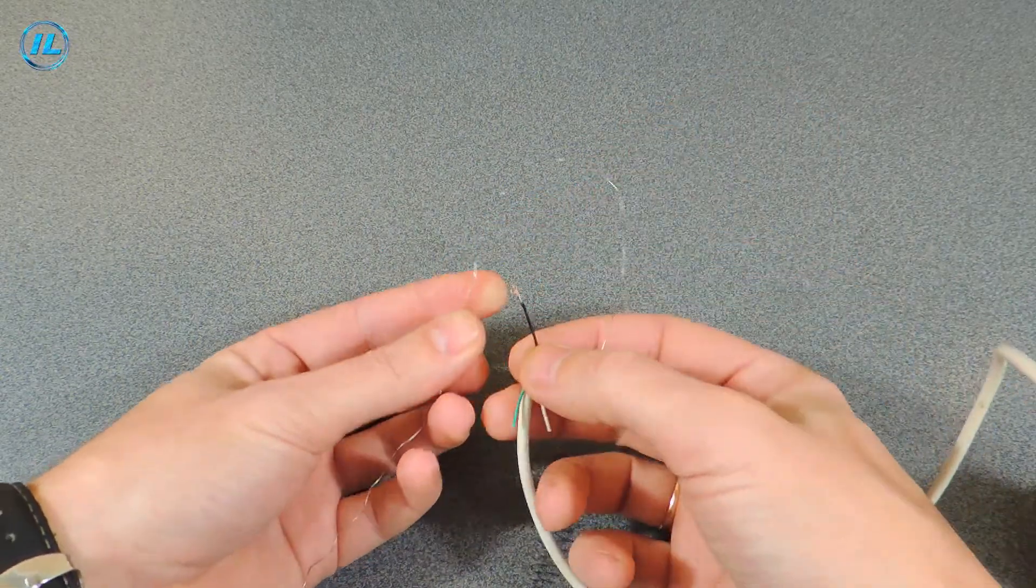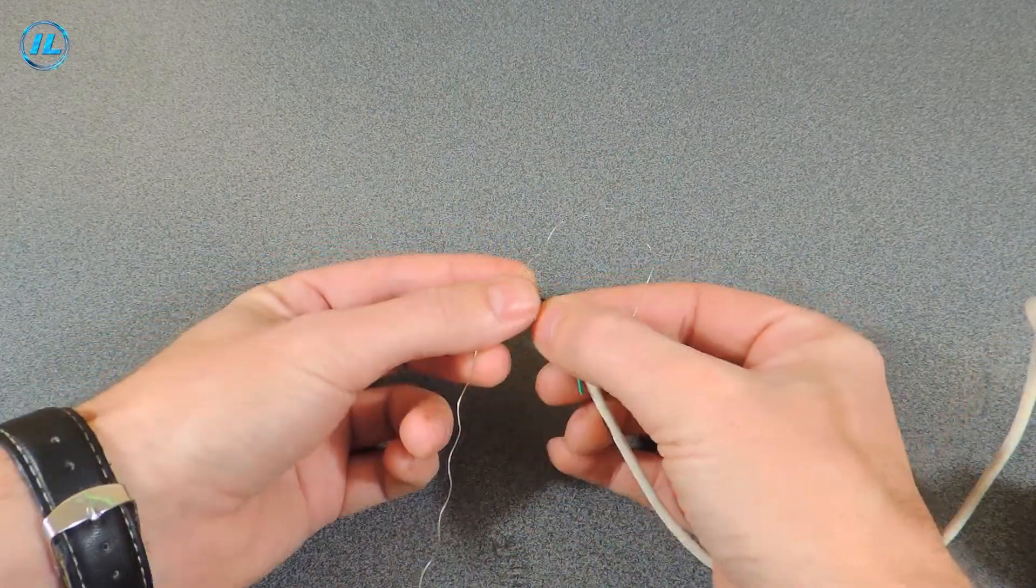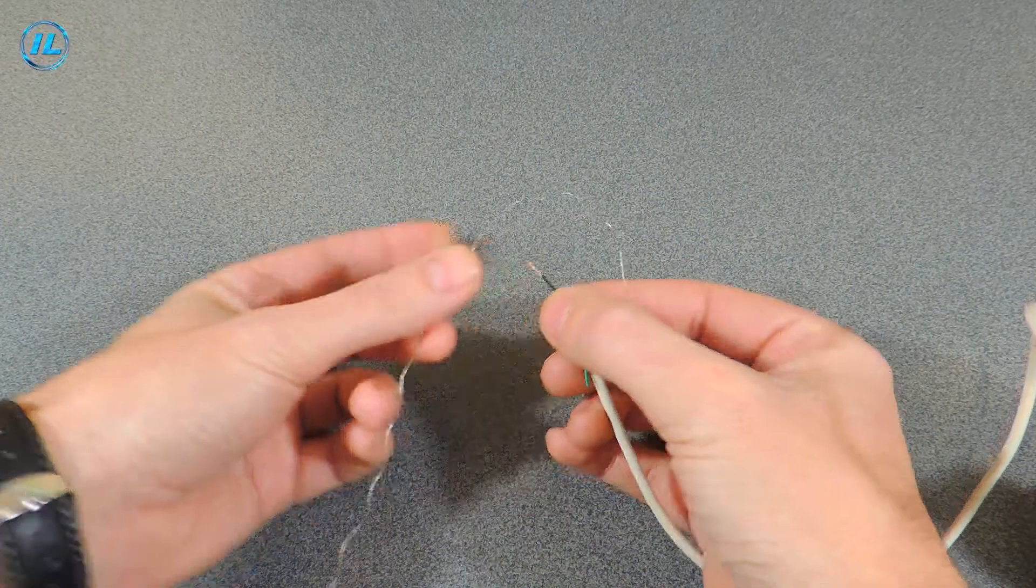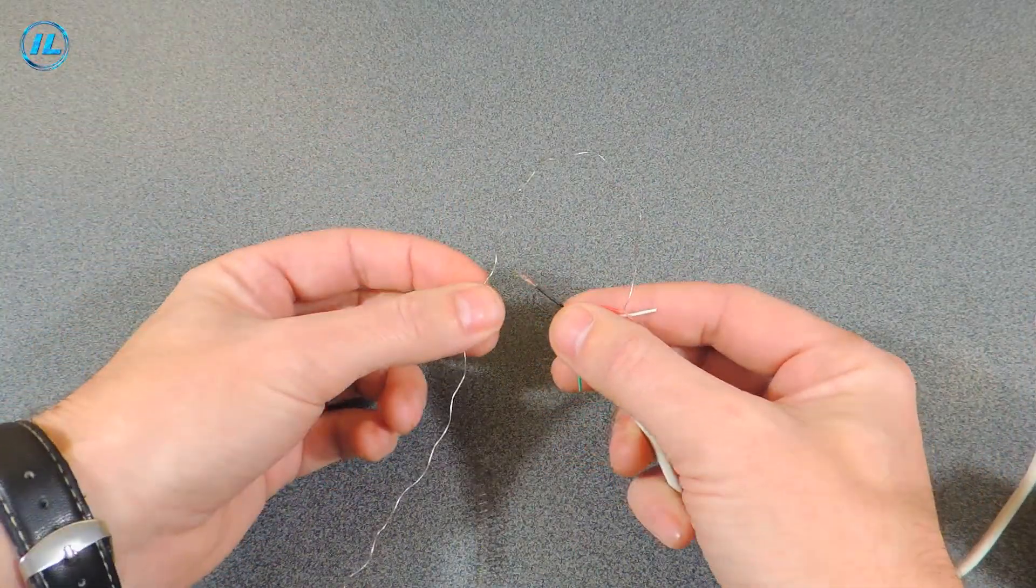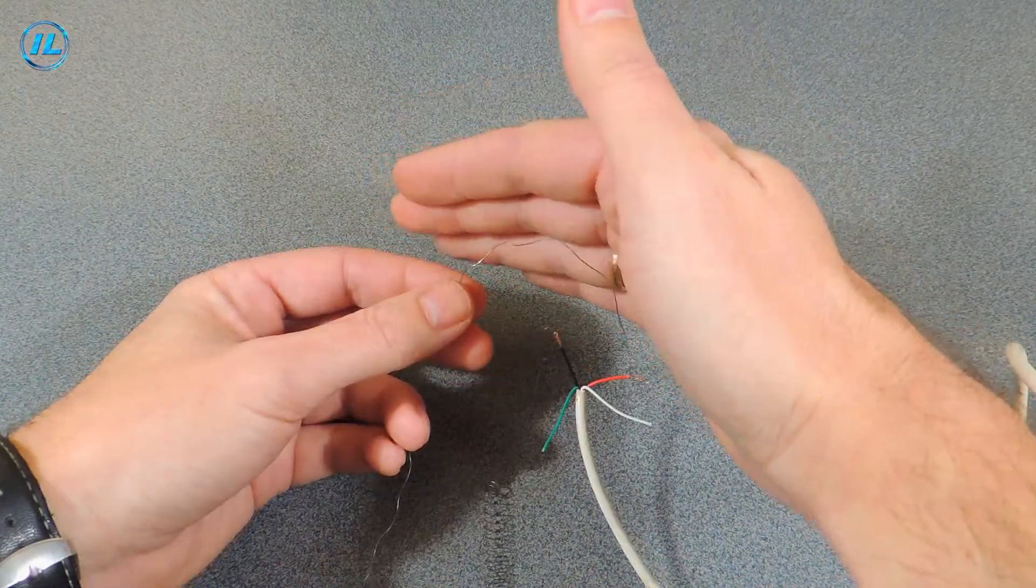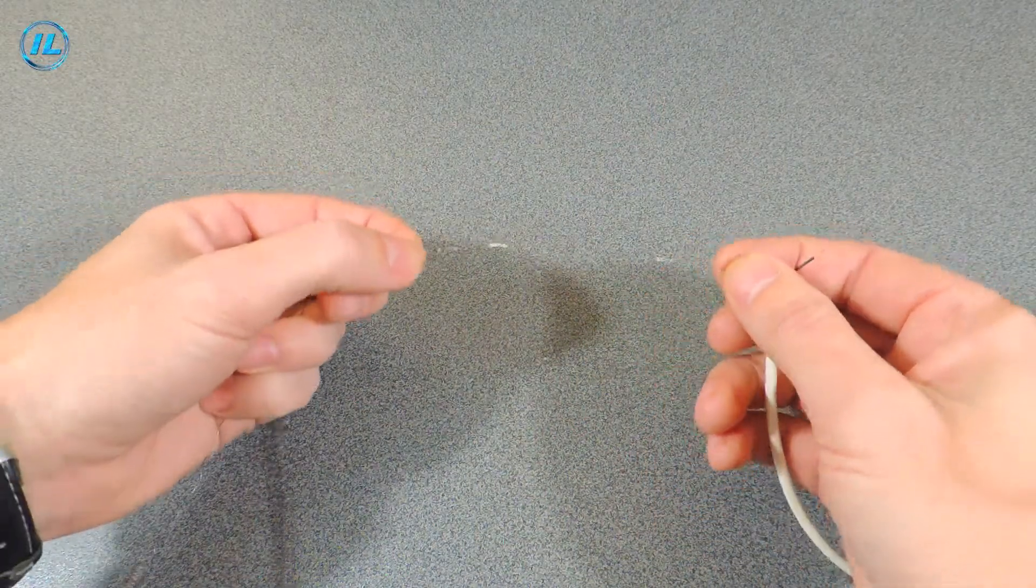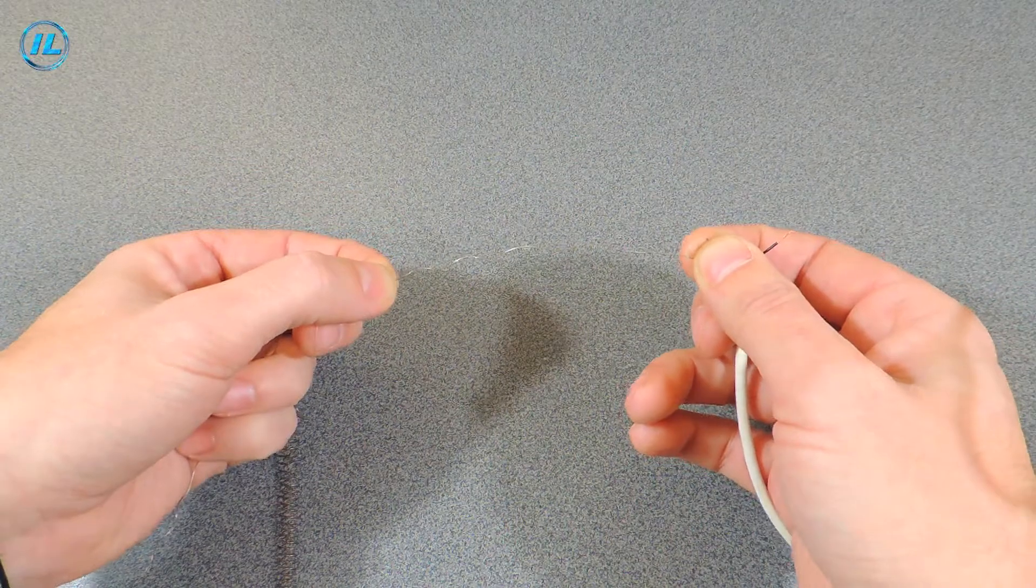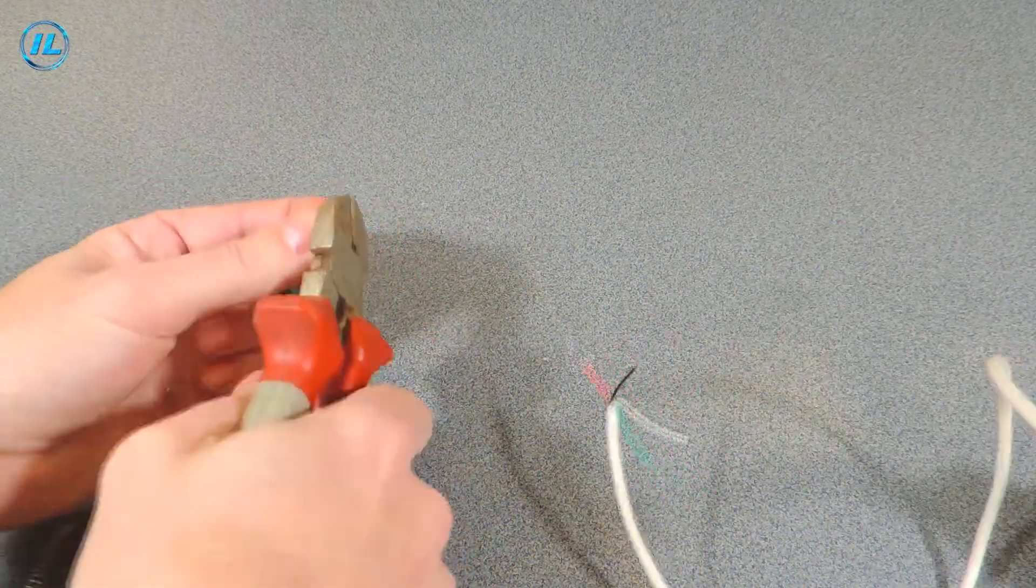But for a soldering iron, this will not be enough. You will get this piece of nichrome wire, the length of which is about 10 centimeters. And now you can start assembling the soldering iron.